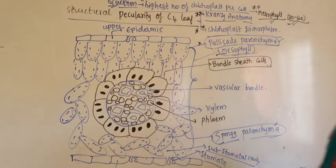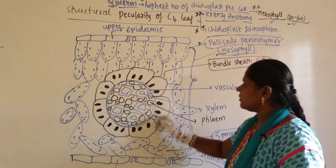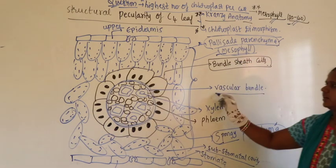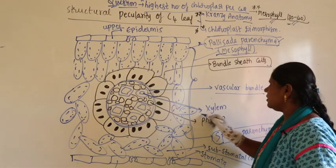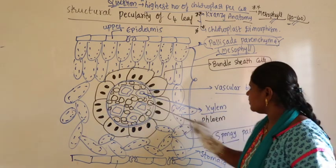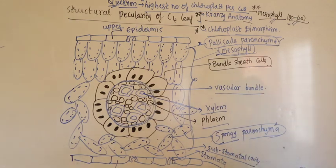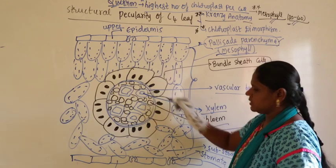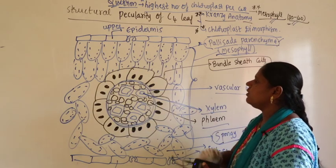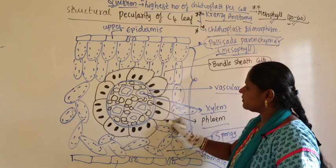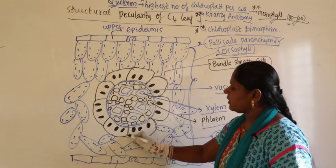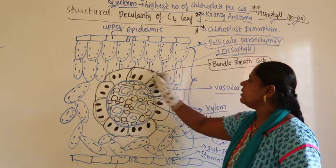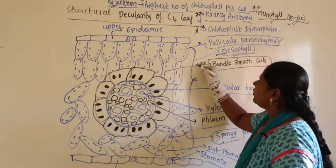In the center is the vascular bundle, containing xylem and phloem. This vascular bundle is surrounded by bundle sheath cells arranged in a ring-like pattern — this is Kranz anatomy.